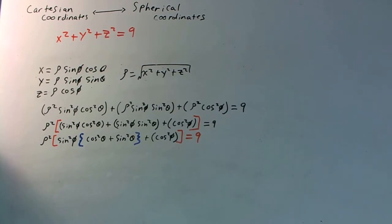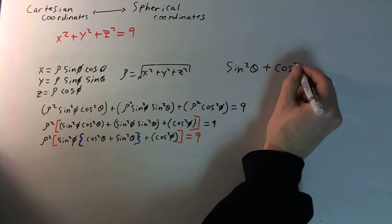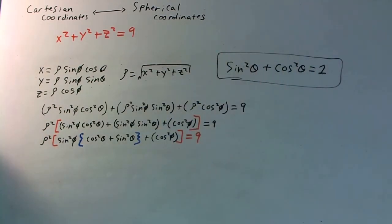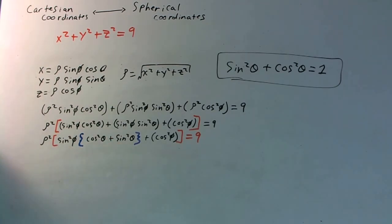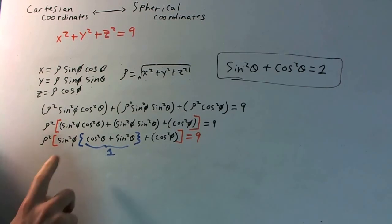Technically, we haven't really changed anything — we just factored some stuff out. But notice that sine squared theta plus cosine squared theta is equal to 1, which is a very famous trigonometric identity. We have cosine squared plus sine squared inside that bracket, which is exactly the same thing, so it just equals 1. Since 1 times anything is just that same thing, that cancels out and we're left with just sine squared phi.